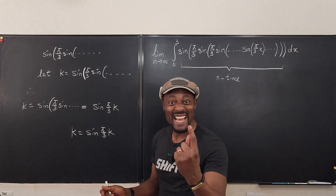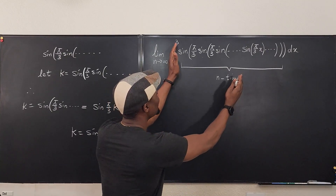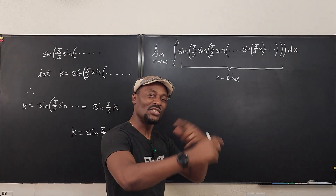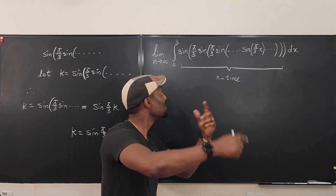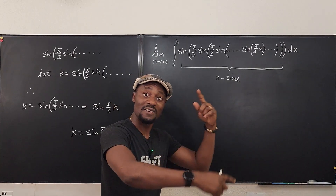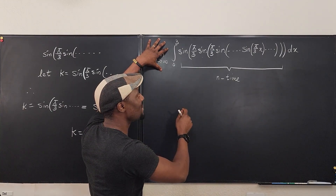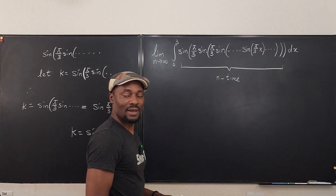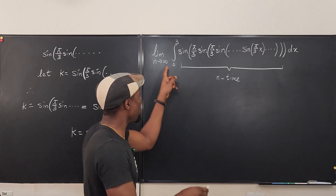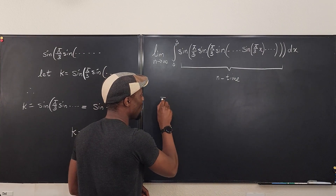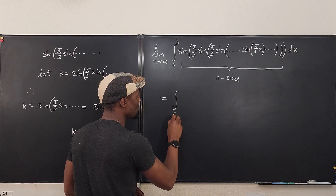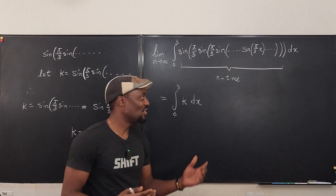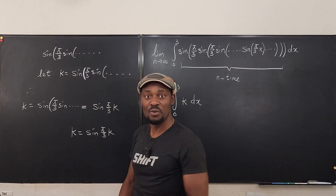Because if I can find k, I just put k here. All of the things we have — the infinite number of sine of sine of sine of pi over 3 — this is no longer relevant. All I'm going to have is just the integral of k. So what I have here is actually equal to the integral from 0 to 3 of k dx. You see how easy this is, if only we can solve this equation.